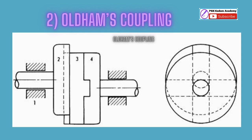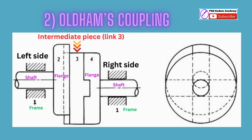The second inversion of the double slider crank chain is Oldham's coupling. An Oldham's coupling is used for connecting two parallel shafts whose axes are a small distance apart. The shafts are coupled such that if one shaft rotates, the other also rotates at the same speed. Links: frame (fixed) is link 1; shaft and flange on the left is link 2; shaft and flange on the right is link 4; and the intermediate piece is link 3. Kinematic pairs include two turning pairs (frame with each shaft) and two sliding pairs (each flange with the intermediate piece).